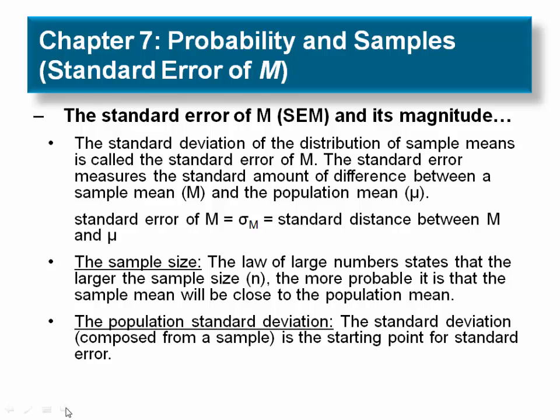As the sample size increases, the error between the sample mean and the population mean should decrease. The greater the variance in the population, the less probable it is that the sample mean will be close to the population mean.